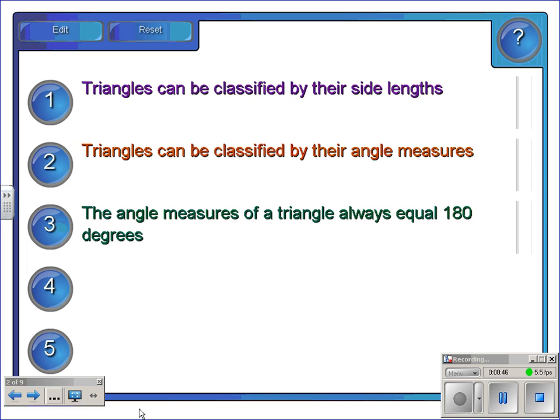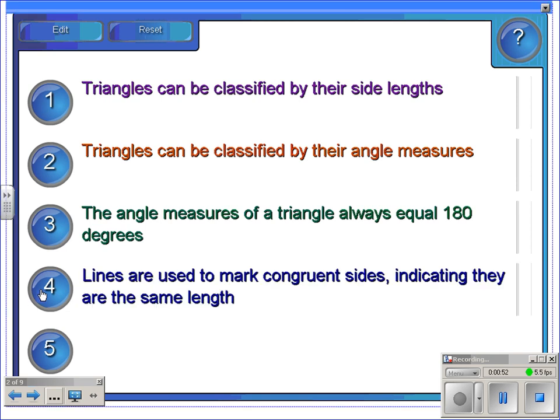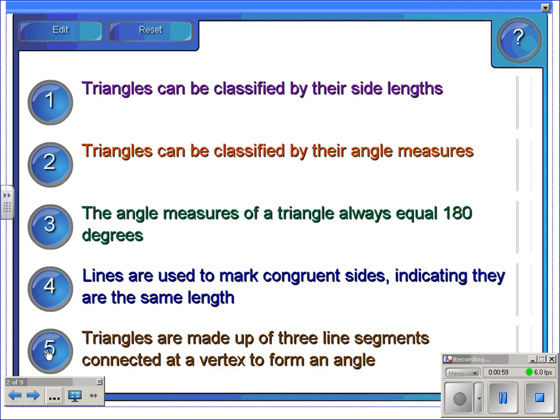If you're adding up the angle measures of a triangle and don't get 180 degrees, you've done something incorrectly. Obviously, lines are used to mark congruent sides, which tells you that they're the same length. We'll talk more about that in just a minute. And of course, as we all know, triangles are made up of three line segments. Remember, those are line segments because they have endpoints at both ends, and they're connected at a vertex when two of those line segments meet, and that is exactly what forms an angle.